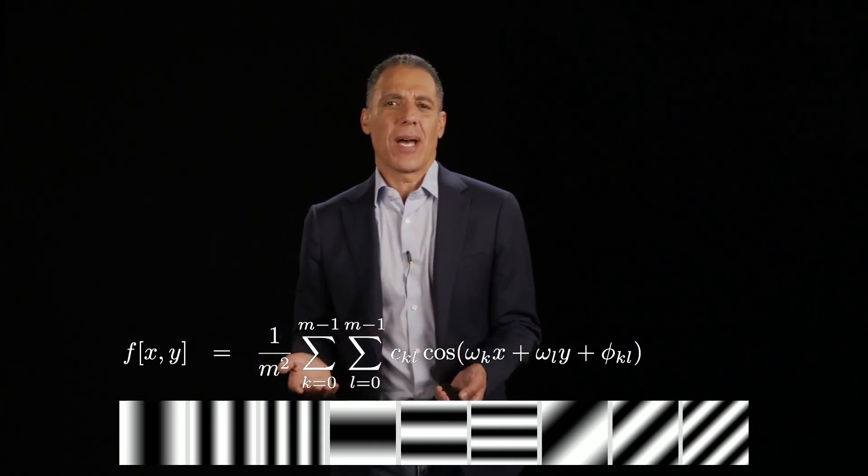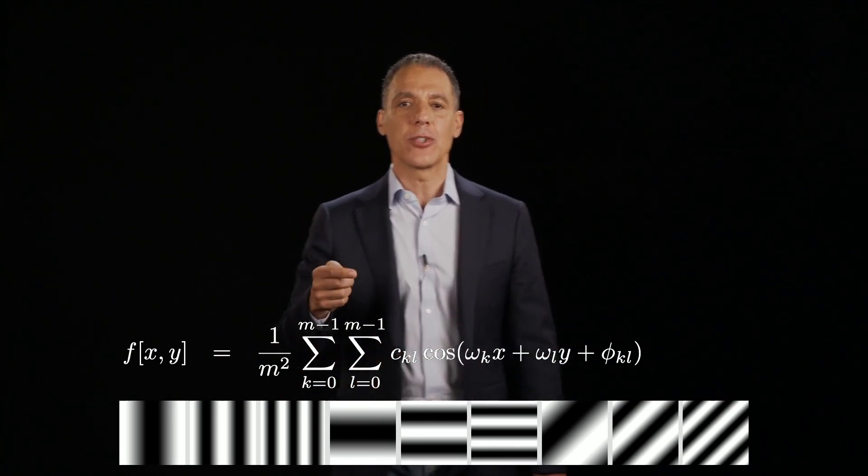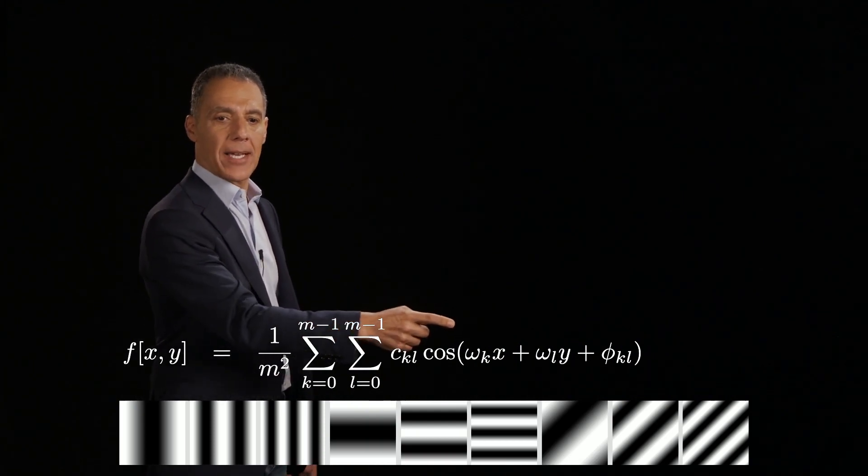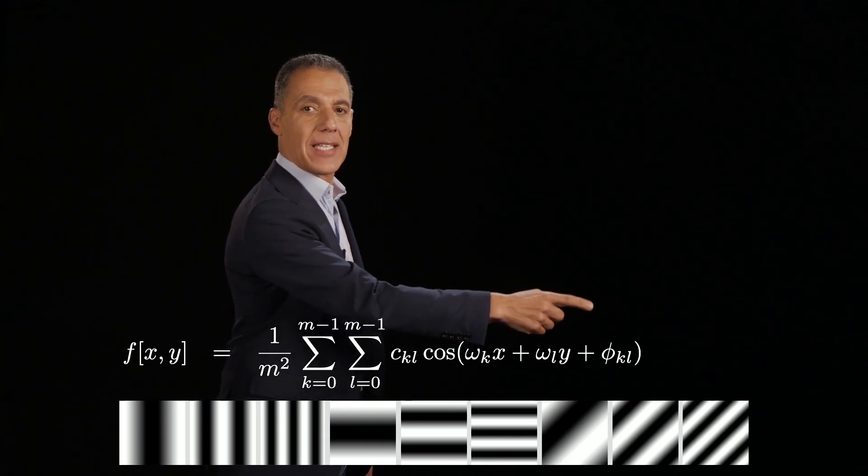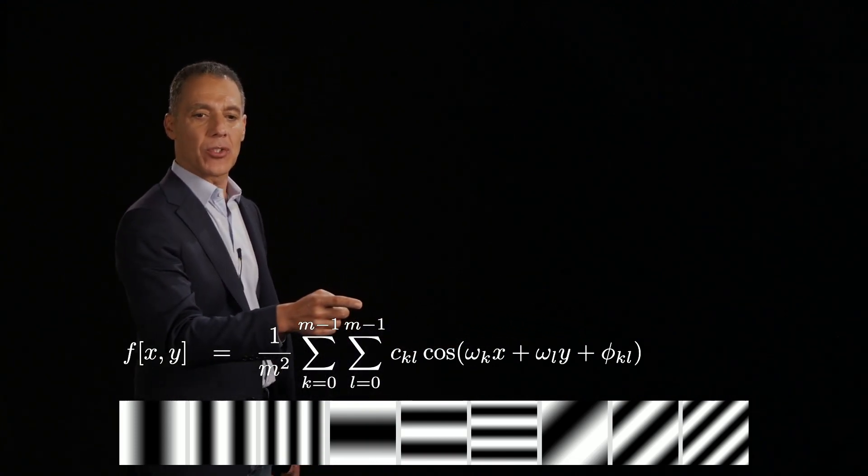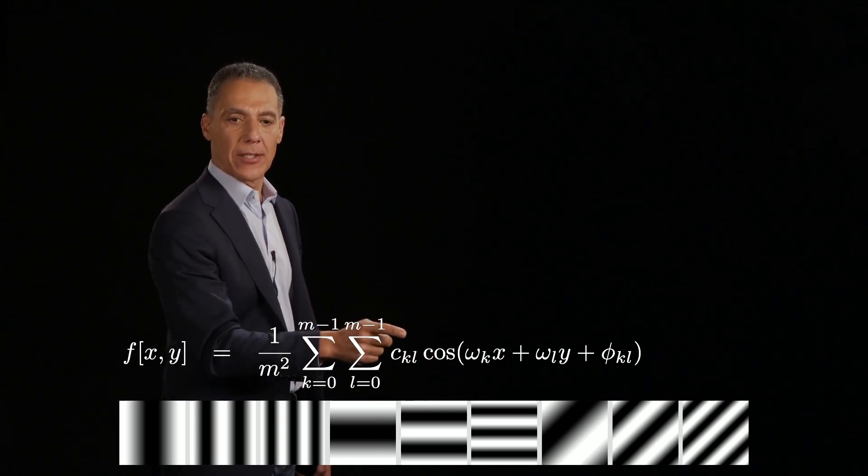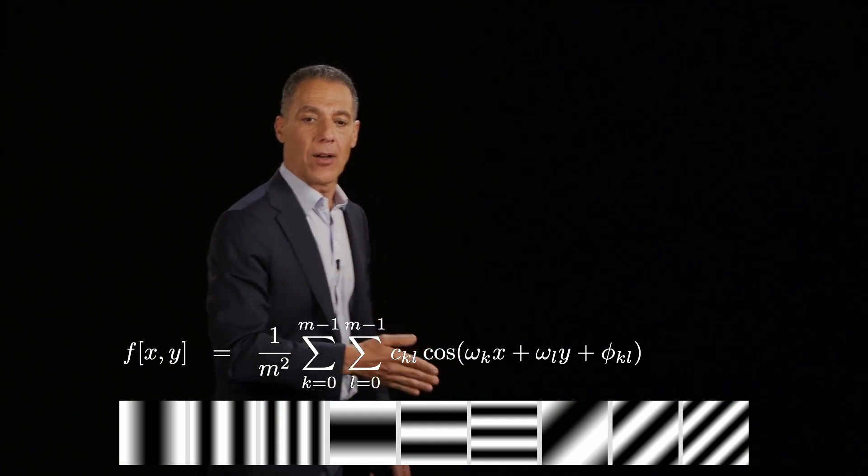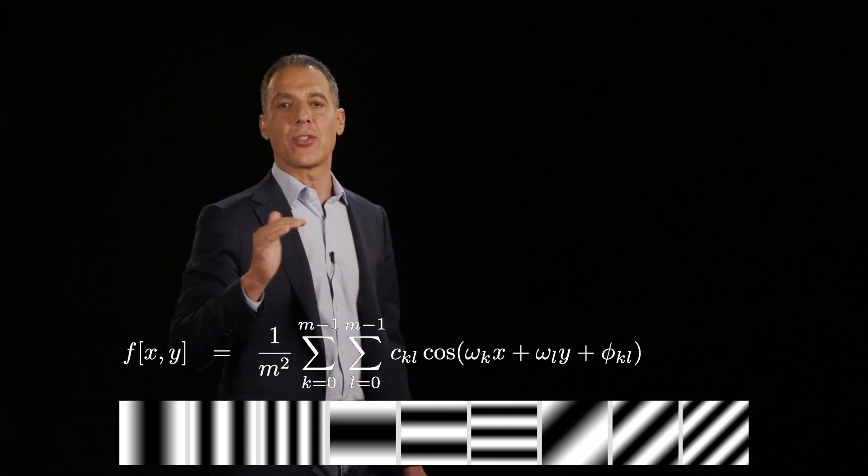You may have never thought about that. We tend to think of the cosine and sine as an inherently one dimensional quantity. But here's the 2D basis. Let me do the algebra first. The 2D basis is cosine omega kx plus omega ly plus phi kl. So notice I have a double sum here. There is a frequency in the horizontal direction, that's omega sub k. There is a frequency in the vertical direction, that's omega l. And then there's just an overall phase shift. These are so-called sinusoidal gratings.